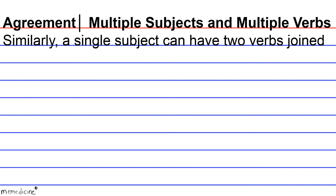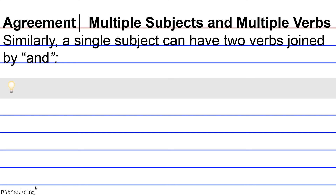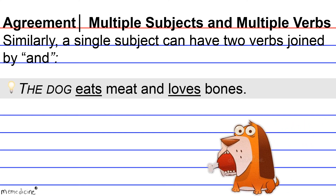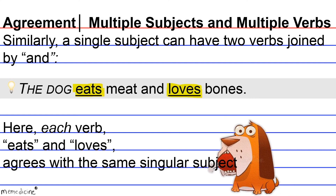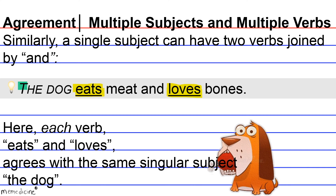Similarly, a single subject can have two verbs joined by 'and.' Let's take a look at this example: the dog eats meat and loves bones. Here, each verb — eats and loves — agrees with the same singular subject, the dog. Therefore, this is a correct statement.